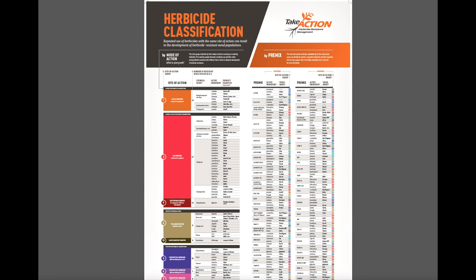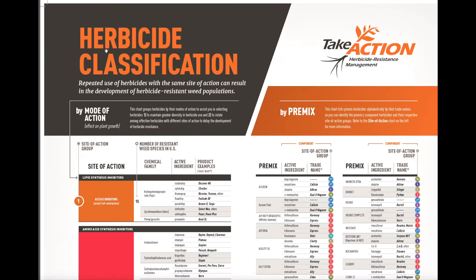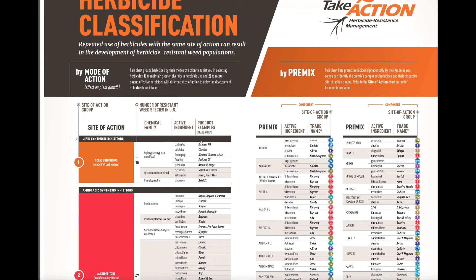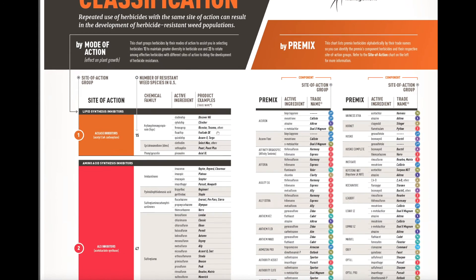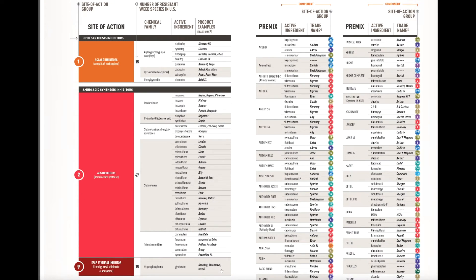We're going to work through the left side of the chart first, working from outside in. If you look at the far right column of the chart, you will see product examples or trade names you're probably familiar with. For instance, you can see Roundup and Touchdown are products with glyphosate in them, and they are examples of Group 9 herbicides. The number in the circle on the far left is a group number, and that group number is associated with a site of action.